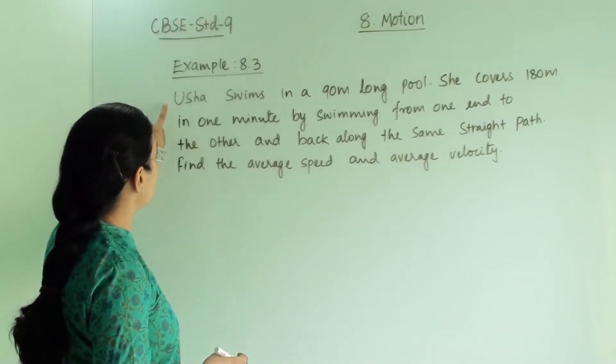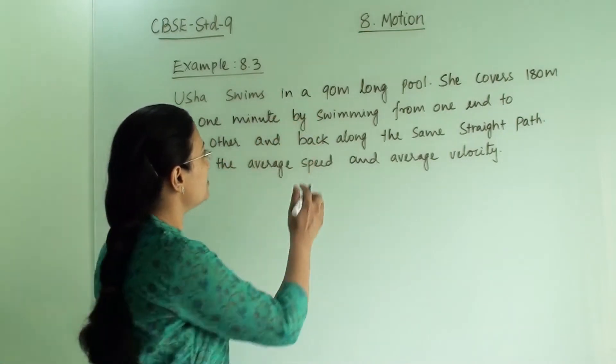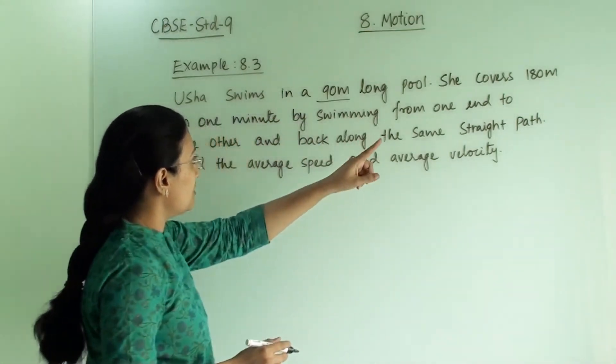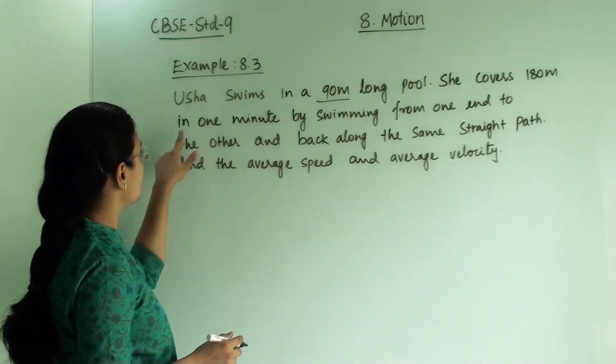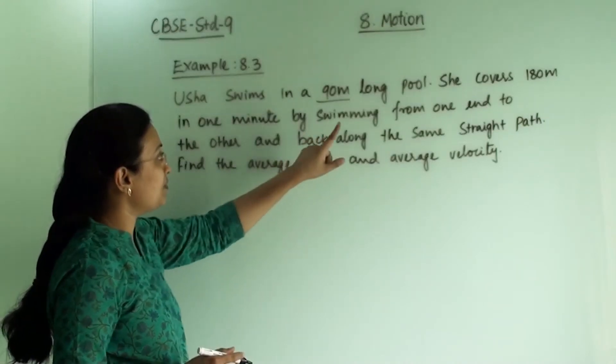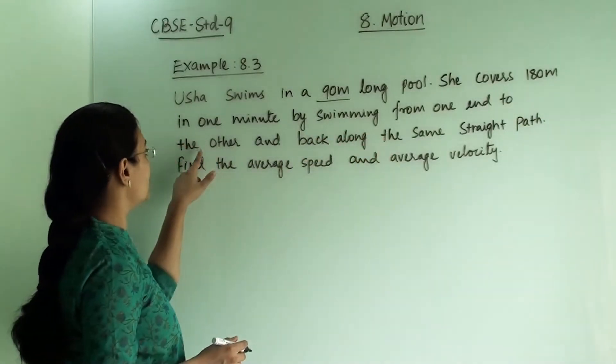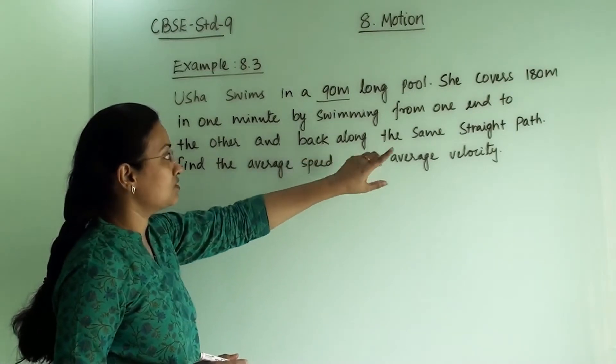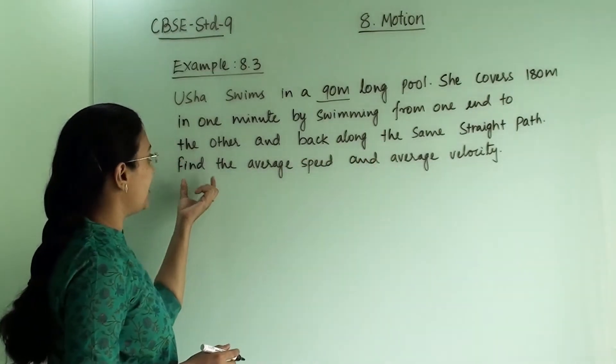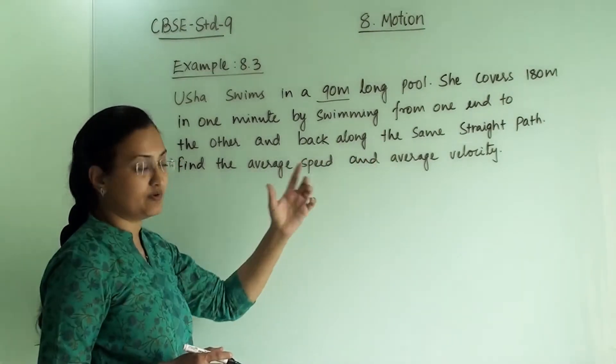So it says that Usha swims in a 90 meter long pool. She covers 180 meters in one minute by swimming from one end to the other and back along the same straight path. Find the average speed and average velocity.